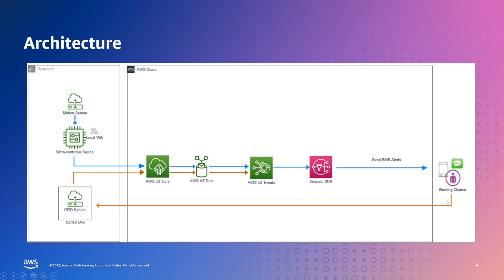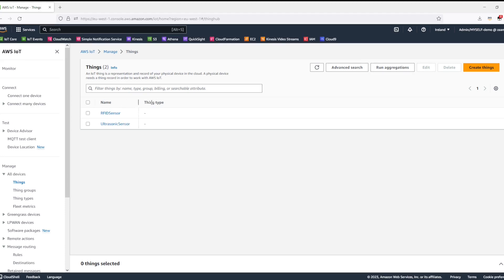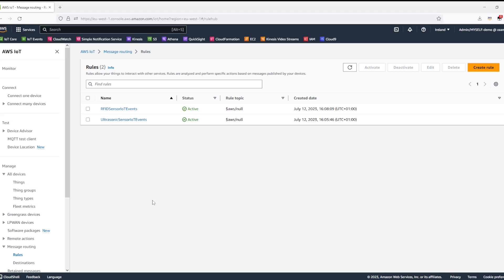Once the cleaner has received the alert and they go to the restroom to perform the cleaning, once they're done with the cleaning they will update the status using their RFID card, and this is captured by the RFID tag sensor and sent back to AWS IoT Core. From there it again goes to AWS IoT Events and the status of the toilet is set back to clean. I'm now logged into the AWS IoT Core console and under the things you can see that I have created the RFID sensor and the ultrasonic sensor as IoT things, and then within the IoT rules engine I have created one rule against each type of sensor so that they both can send the data to IoT Events.